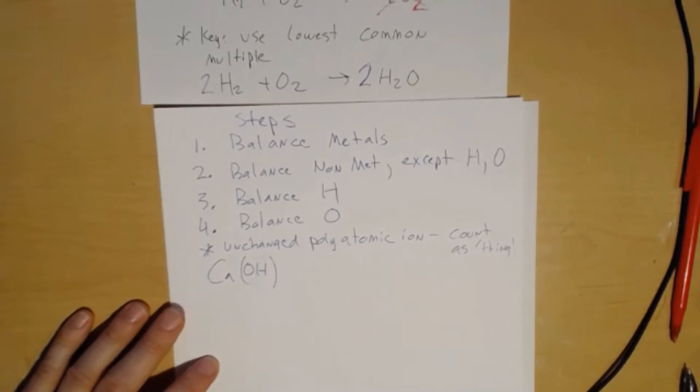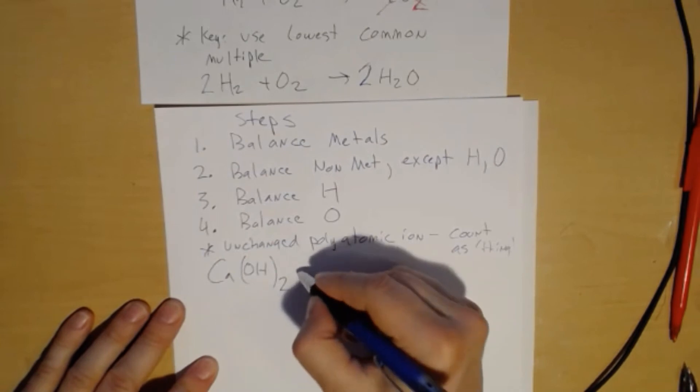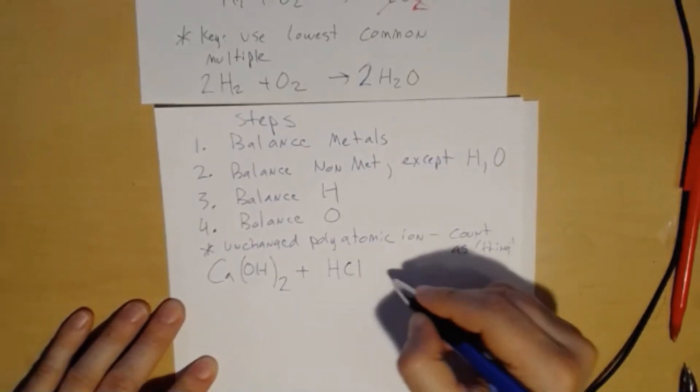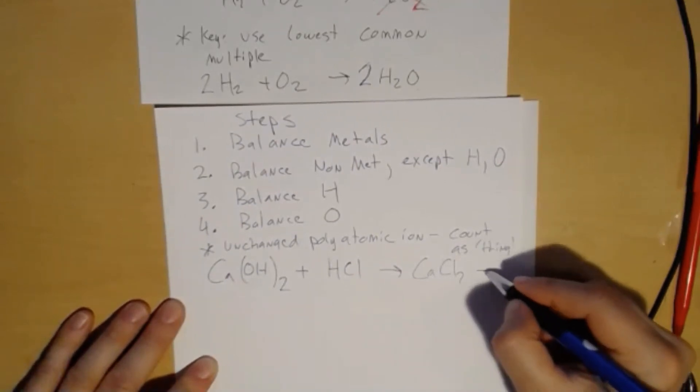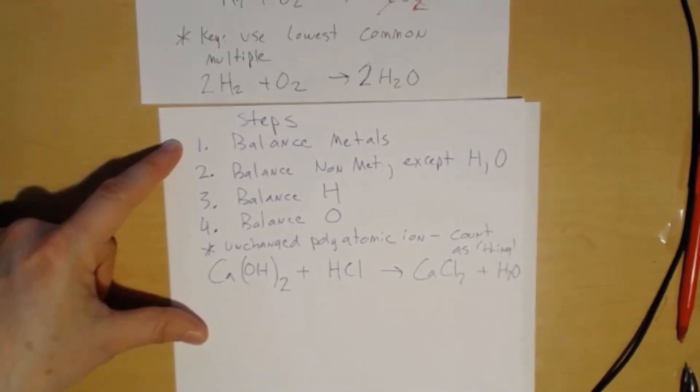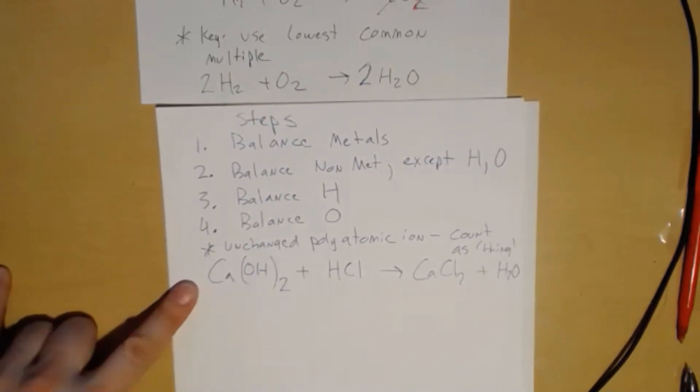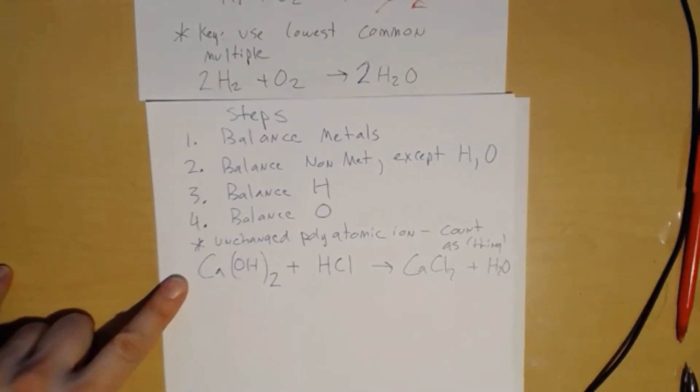All right. So this one's not going to be that case. So here we have calcium hydroxide reacting with hydrochloric acid to make calcium chloride and water. All right, so let's look at this equation and let's say to ourselves, 'Okay, self, what's the metal here? Are there metals here?' Calcium. Oh, you balance calcium first.